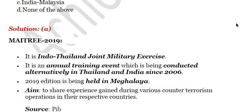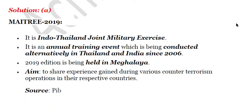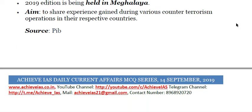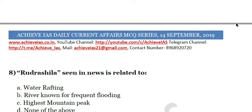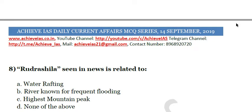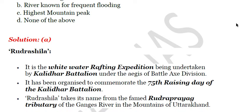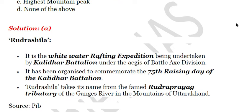The 2019 edition was held in Meghalaya. The aim is to share experiences gained during various counter-terrorism operations in their respective countries. The eighth question: Rudra Shila seen in news is related to — A) water rafting, B) a river known for frequent flooding, C) highest mountain peak, D) none of the above. The answer is A, water rafting. Rudra Shila is basically a white water rafting expedition undertaken by the Kalidhar Battalion under the aegis of the Battle Axe Division, organized to commemorate the 75th raising day of the Kalidhar Battalion. It takes its name from Rudra Prayag, a tributary of the Ganges river in the mountains of Uttarakhand.